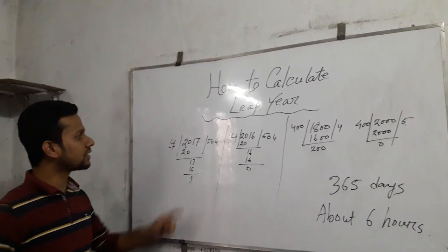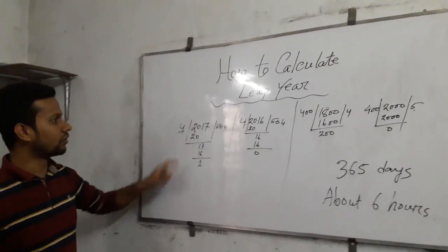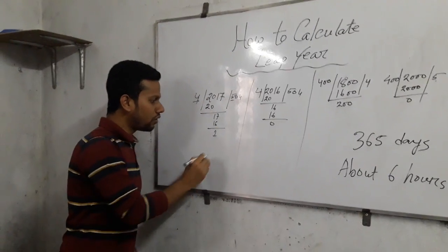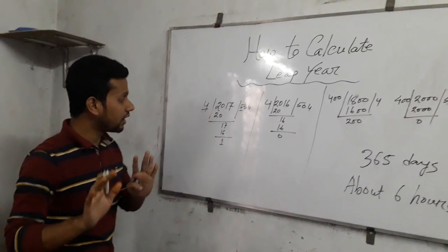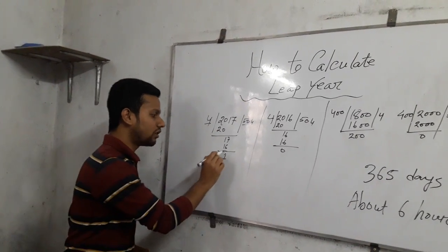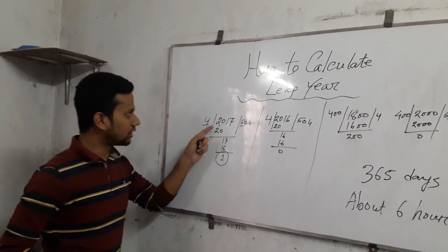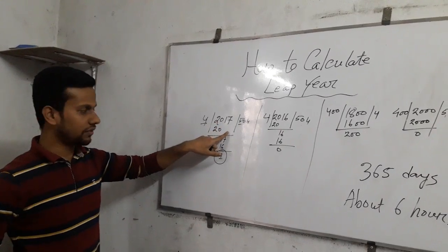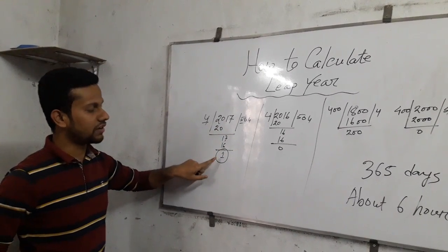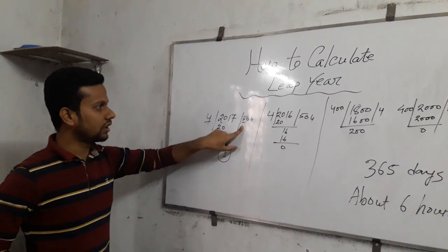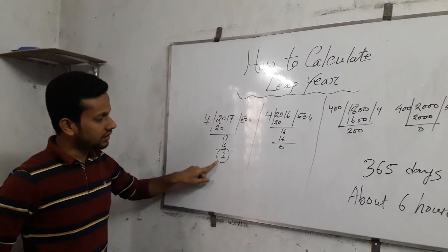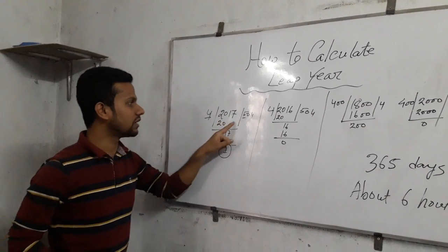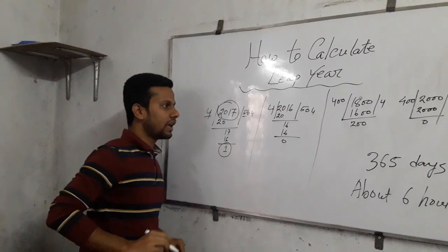See that 2017, now divided by four. If no remainder, that is leap year. If it has a remainder, that is not a leap year. So 2017 is not a leap year because it has a remainder. The quotient is 504 and it has a remainder.